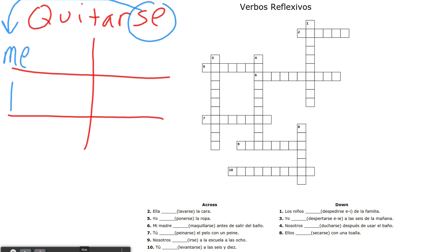Depending on who you're talking about. So for myself, it's going to be me, for you it's te, for he or she it's se, for us it's nos, for vosotros it's os, and for ellos it's also se.